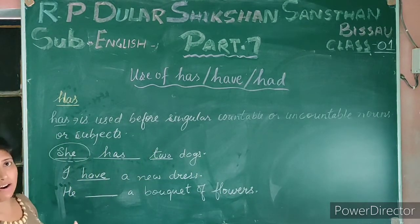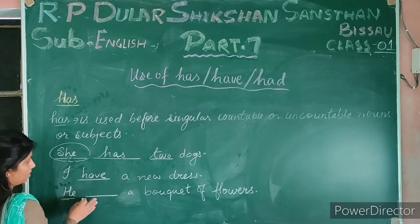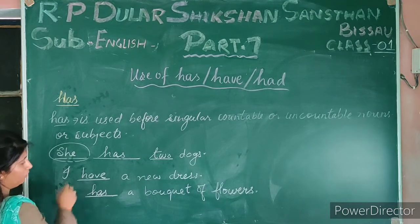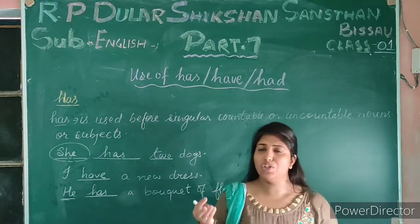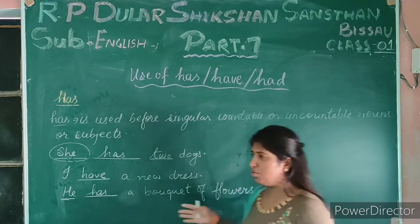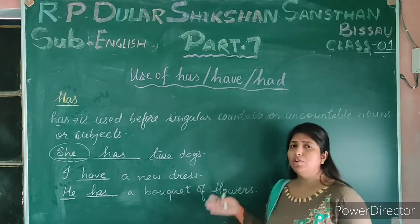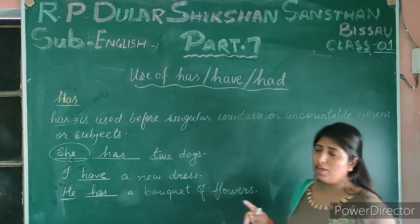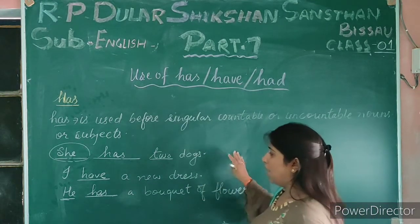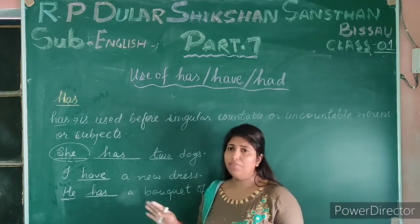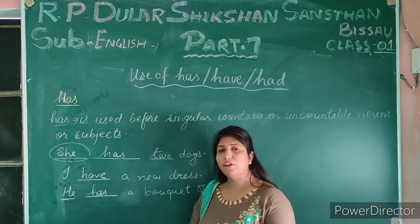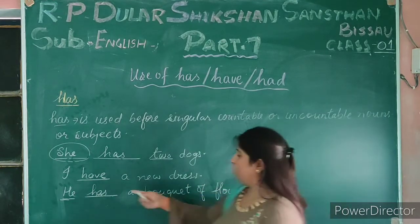For example: He — a bouquet of flowers. The subject he is singular, so we use has. He, she, it, and any singular noun take has. I is singular but in present tense, I always agrees with the first form of the verb, so I have — not I has.